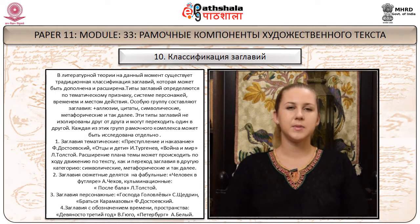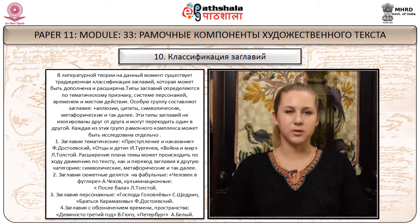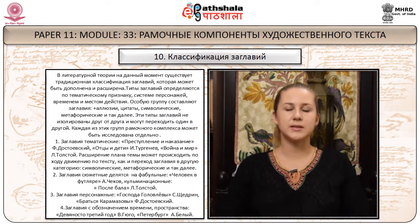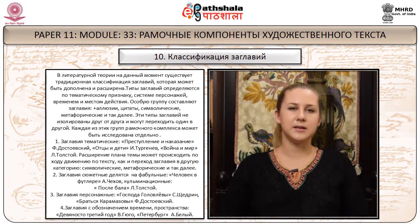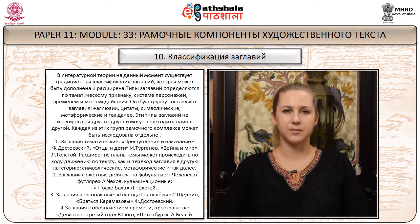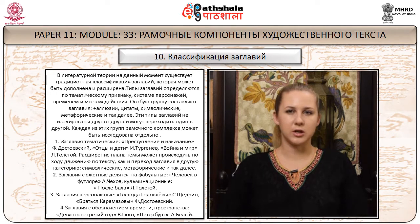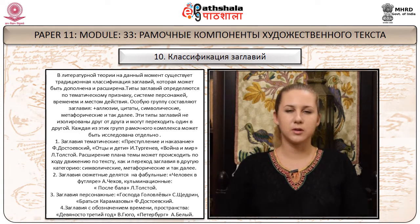Эти типы заглавий не изолированы друг от друга и могут переходить один в другой. Каждая из этих групп рамочного комплекса может быть исследована отдельно. Первое – заглавия тематические: «Преступление и наказание» (Достоевский), «Отцы и дети» (Тургенев), «Война и мир» (Толстой). Расширение плана темы может происходить по кругу движения по тексту, как и переход заглавия в другую категорию – символическую, метафорическую и т.д.